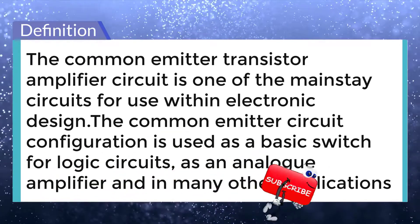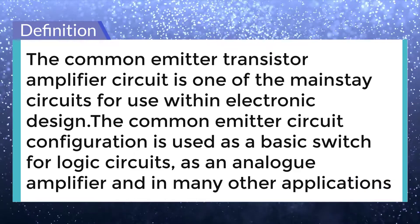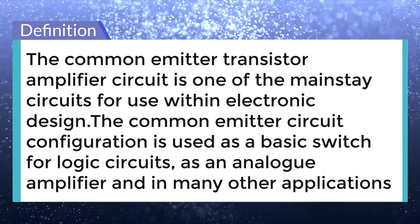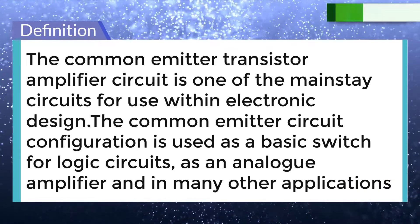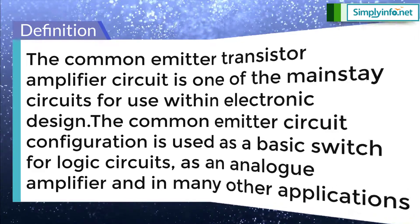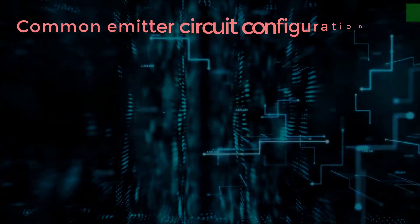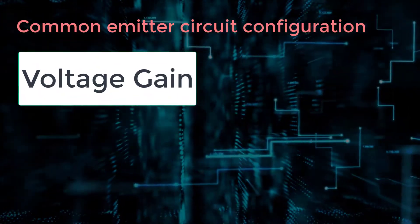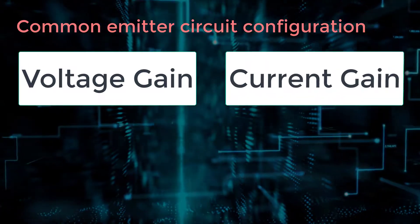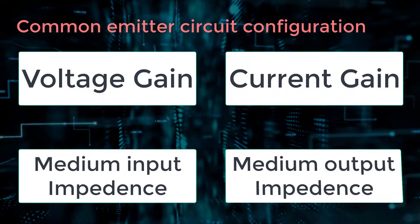The Common Emitter Circuit configuration is used as a basic switch for logic circuits, as an analog amplifier and in many other applications. The Common Emitter Circuit configuration provides voltage gain combined with moderate current gain as well as medium input and medium output impedance.